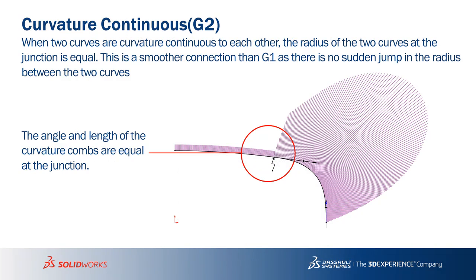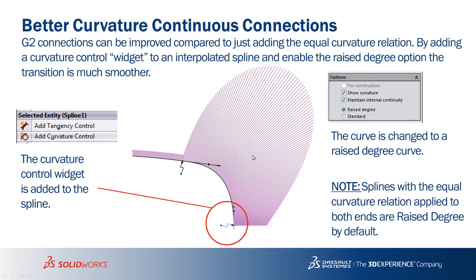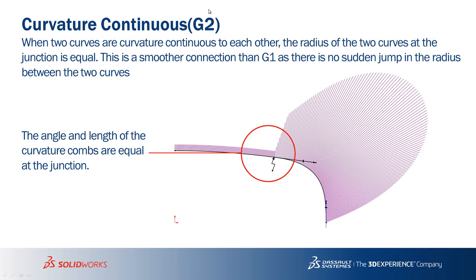The next level of quality is curvature continuous, or G2. When two curves are G2 to each other, the radius and the angle are both equal — so the radius of this spline equals the radius of this arc. However, even with equal curvature connections, there's a trick for even better results. This condition is technically equal curvature but not truly curvature continuous — even though the radius is the same, there's not a really smooth connection; you can see a little spike. There's a way we can improve that connection.